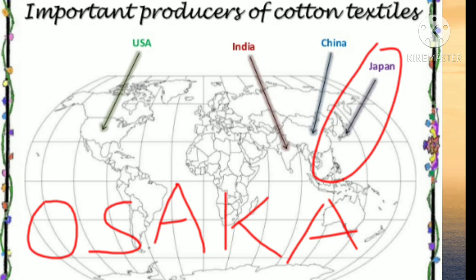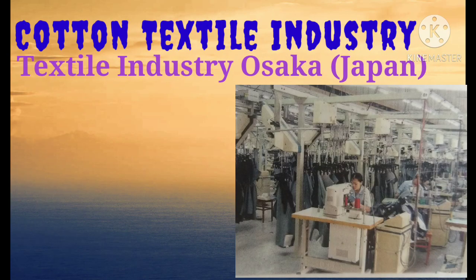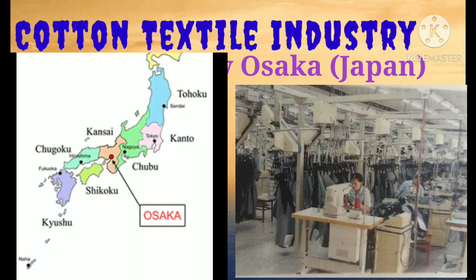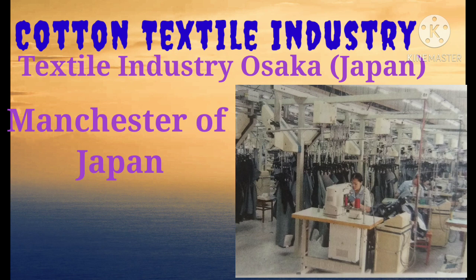Now let's move to the textile industry in Osaka, Japan. Japan has been a famous producer and exporter of cotton fabrics in the world. Osaka is the most outstanding cotton spinning center of Japan. It is called the Manchester of Japan.